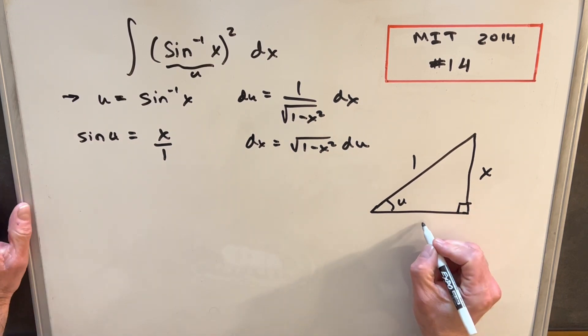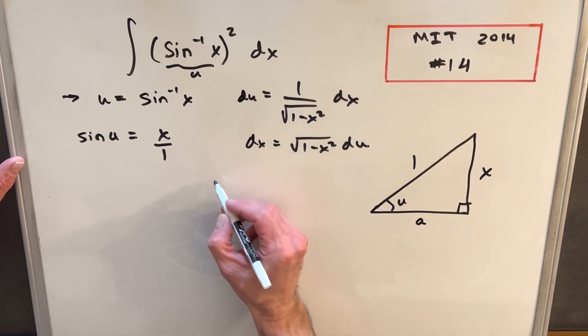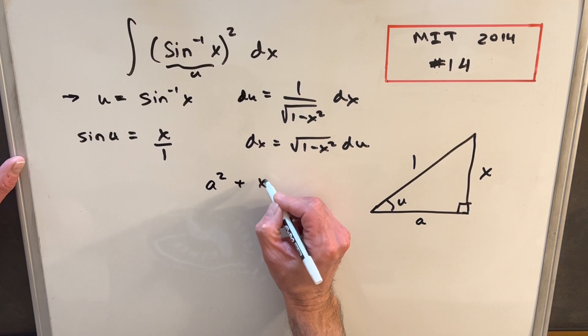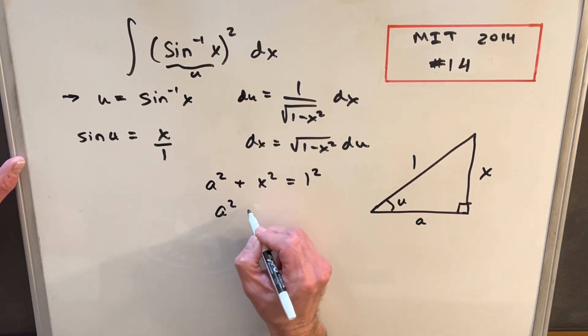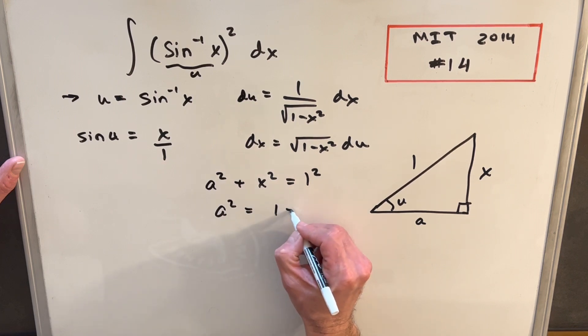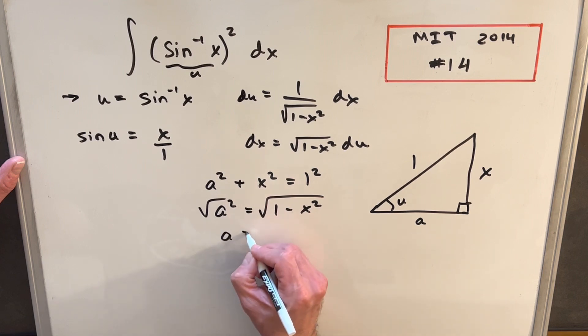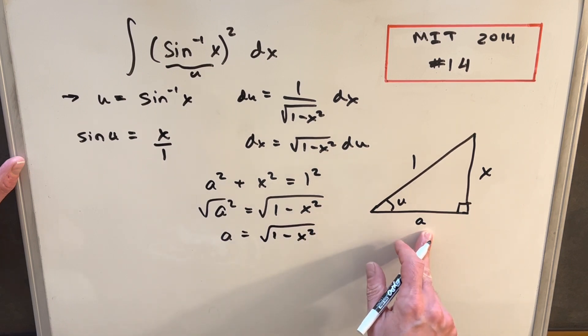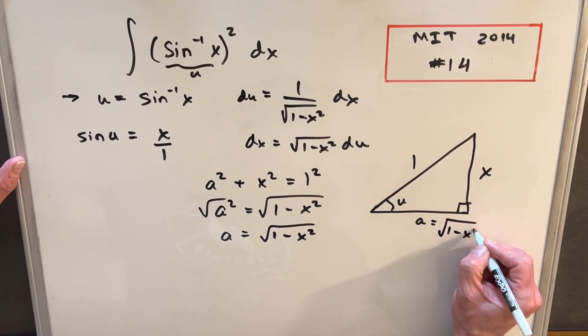And so we just want to solve for this third side. Typically I'll just find the third side by inspection, but if you have a hard time with that, you could use the Pythagorean theorem, which tells us that a squared plus x squared equals 1 squared. We want to solve for a, so a squared equals 1 minus x squared. Taking a square root on both sides, we ignore the negative value because we know if it's a side length it has to be positive. So for our a, we're going to have the square root of 1 minus x squared.